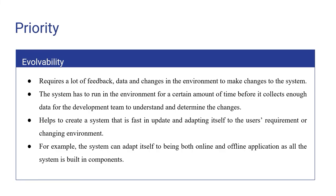It is important to have availability as the design quality of the system, as it helps to create a system that is fast in updating and adapting to user requirements or a changing environment. For example, the system can support being both online and offline as all the system is built in components, making it easier for developers to change individual components without worrying about affecting other components.